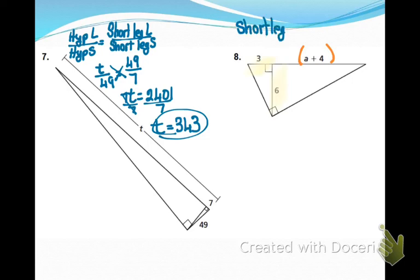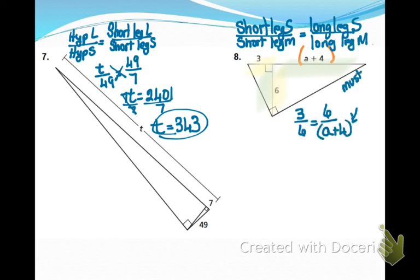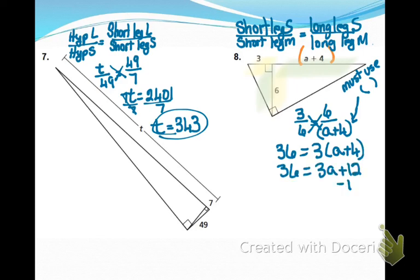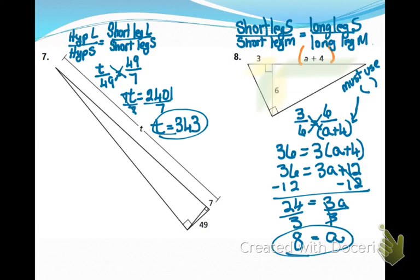I'm hoping you set up short leg to short leg over long leg to long leg. And then you would have to distribute your 3 to your a plus 4. And then you would solve and get that a equals 8.